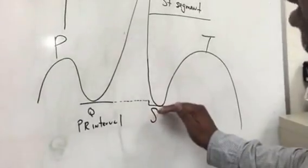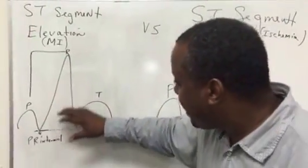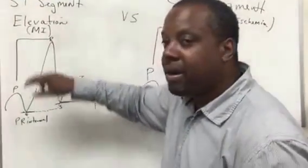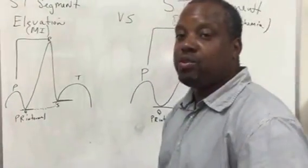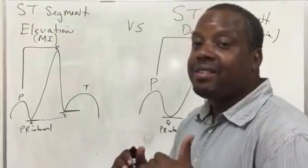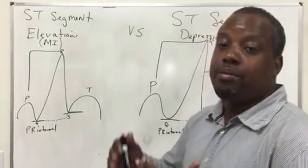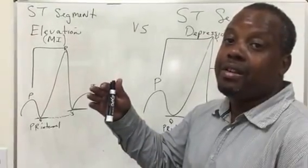If the ST segment is lower, ST depression, myocardial ischemia. If the ST segment is elevated, then you have a myocardial infarction. Whether it's two small boxes, one millivolt versus two millivolt, the ST segment elevation is still an MI. But the number of boxes can tell you basically if it's worse or not.